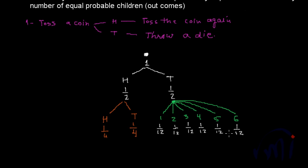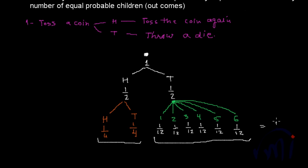So this is how you calculate the probability using the tree method. You may notice that these two outcomes have different probability than these six outcomes, but if you add all of them you get the total probability equal to 1. Similarly at step 1, the total probability is also equal to 1. The total probability of the experiment will always remain 1. After this we are going to solve few examples based on conditional probability. Keep watching MathSmart, bye-bye till then.